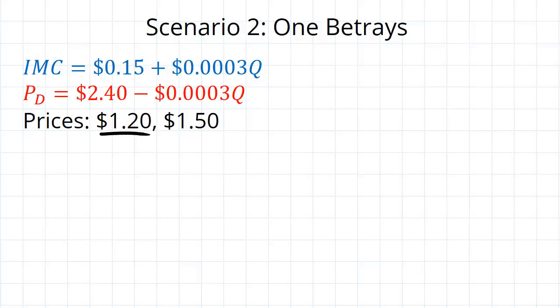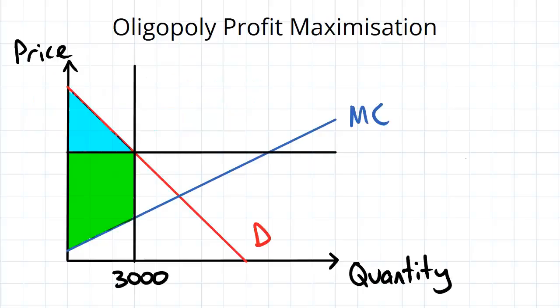So how effective is this going to be in increasing profit? Well, if we have a look back here, we know that the optimal price and quantity combination for the oligopoly collectively was this here. But you may notice that...